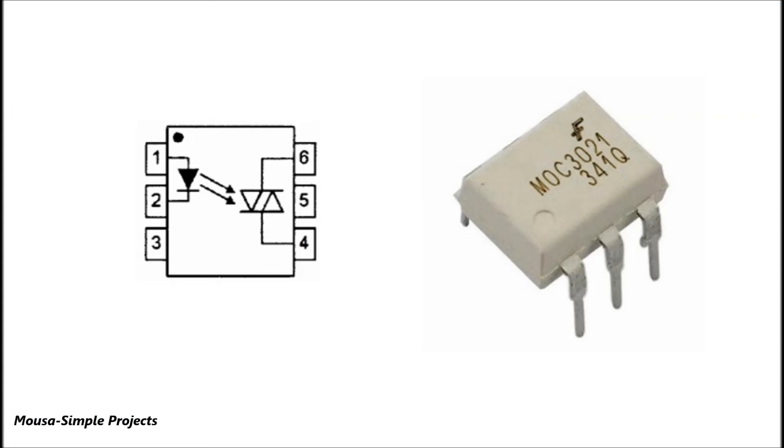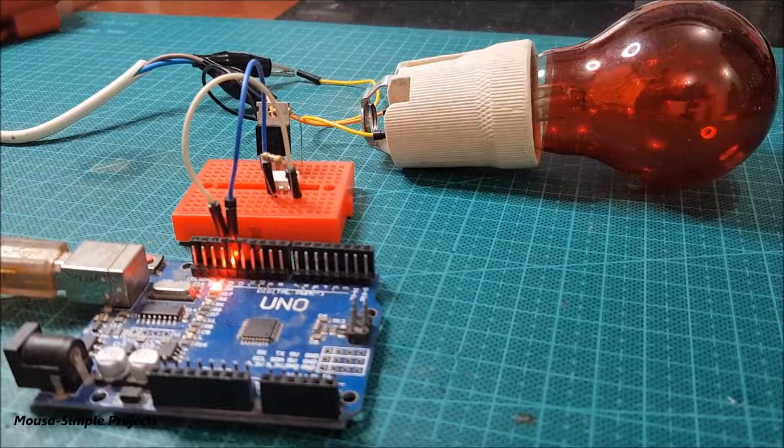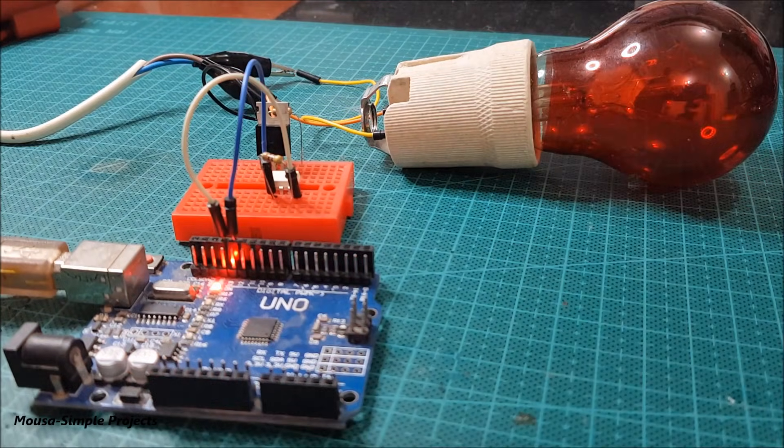Triac driver is a type of photocoupler which has an infrared LED and a photodiac inside. Since there is insulation between them, you can switch the triac using Arduino or any other microcontroller without any problem.